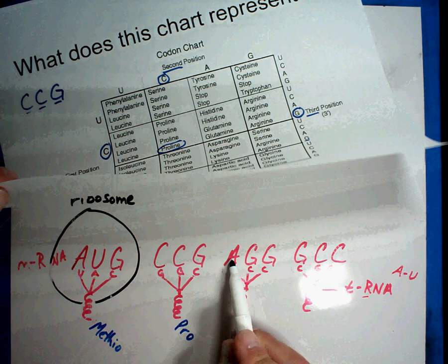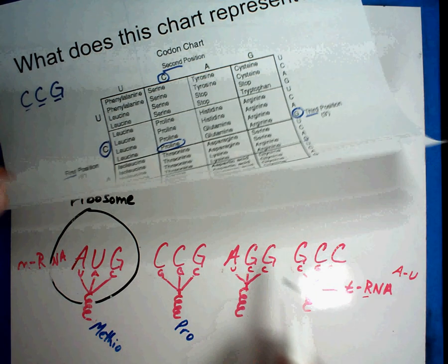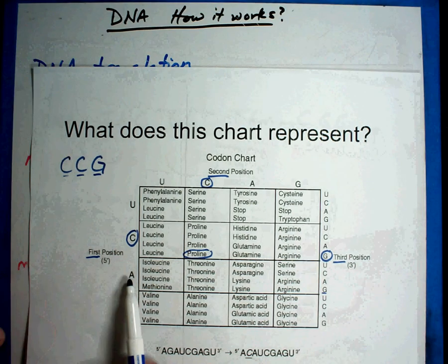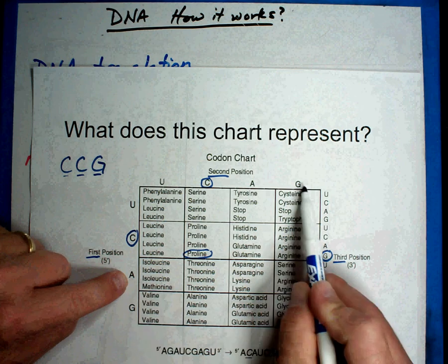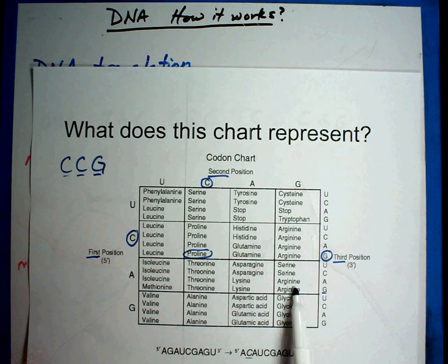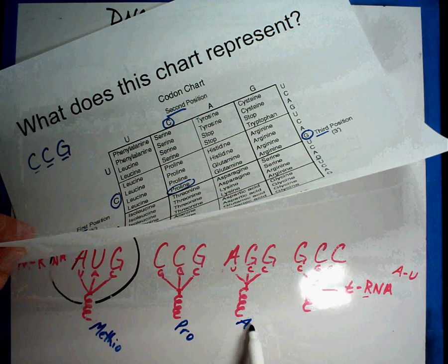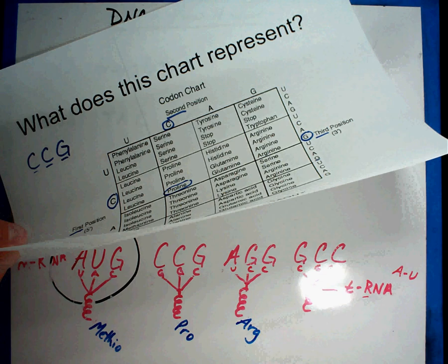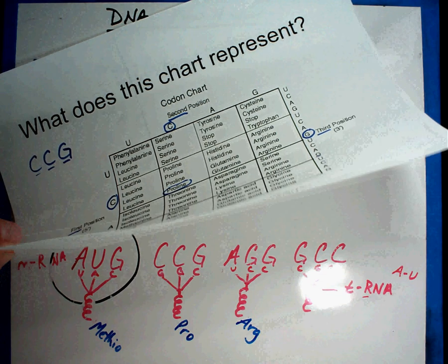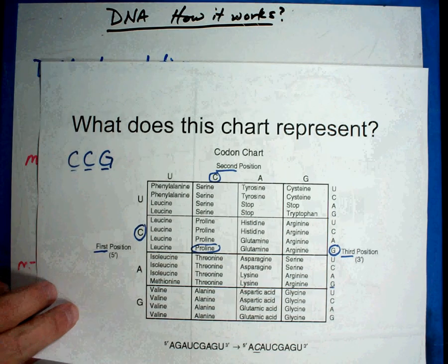The next one is A, G, G. Let's see what that is. A, G. So it's going to be in this box somewhere. And G happens to be the bottom one again. Arginine. We'll abbreviate A, R, G. And I, yeah, that works great. A, G, G.